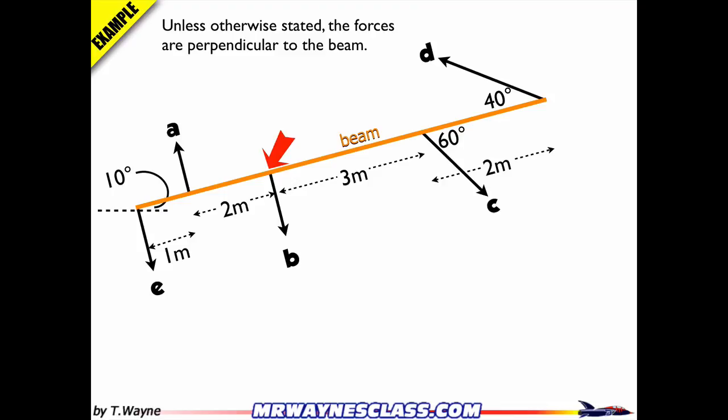So E is fine, it's perpendicular to the pivot point, 3 meters away is the perpendicular distance, and force A is fine, it's 2 meters away from the perpendicular distance to the red arrow. B is actually 0 meters, we'll see that's not going to do anything, and C is 3 meters and D is 5 meters away, those are the perpendicular distances.